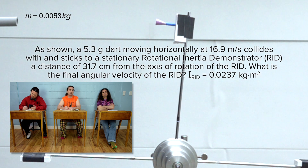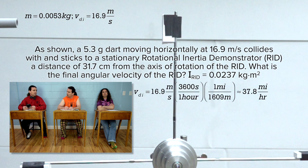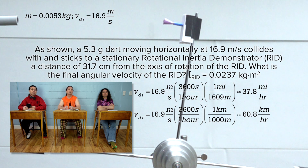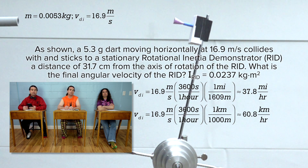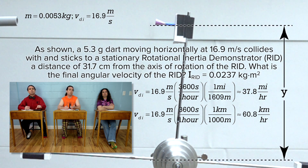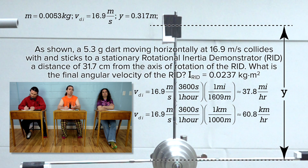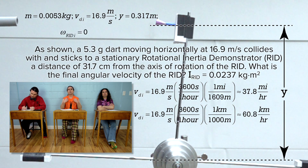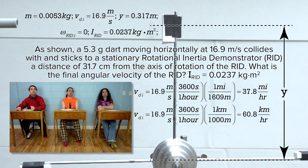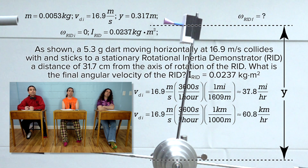The initial velocity of the dart is 16.9 meters per second — that's 37.8 miles per hour or 60.8 kilometers per hour. The distance the dart hits the rotational inertia demonstrator from its axis of rotation, let's call that distance y, equals 0.317 meters. The initial angular velocity of the rotational inertia demonstrator is zero, and the final angular velocity of the demonstrator equals question mark.